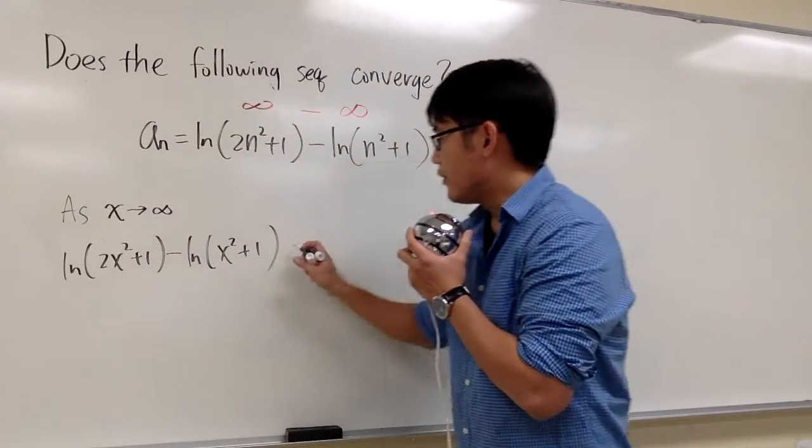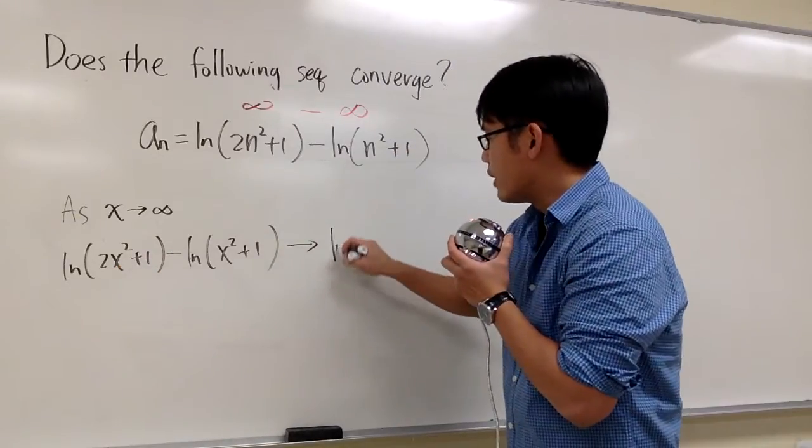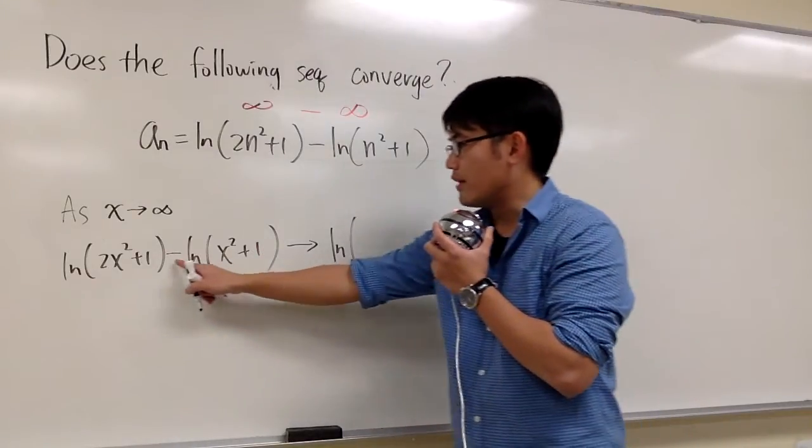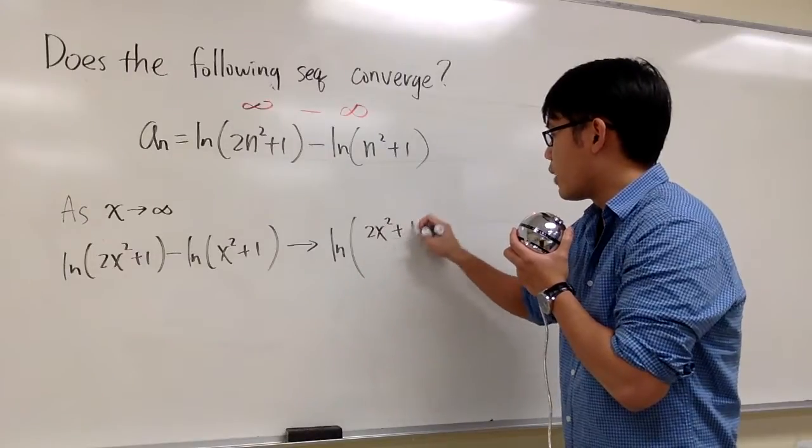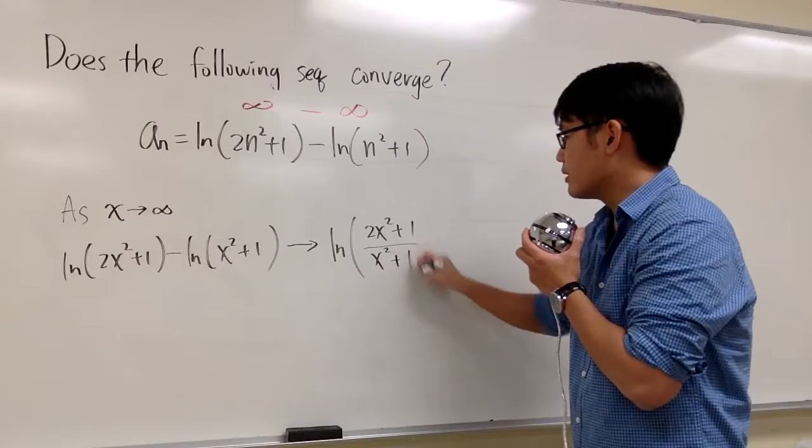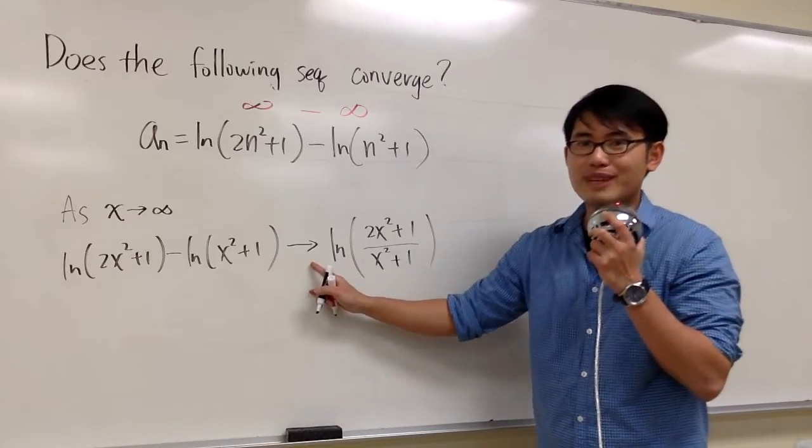First, by the property of ln, we know this right here. It's the same as saying ln of this over that, right? Because right here, we have subtraction. So, we can write this down as (2x² + 1) over (x² + 1). And you can legally put equals sign right here. It doesn't matter. Okay?